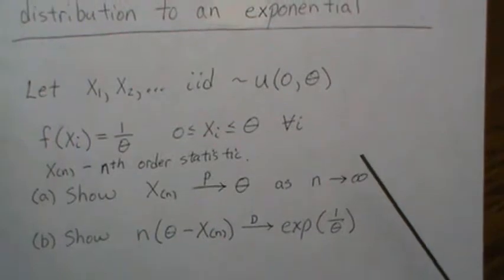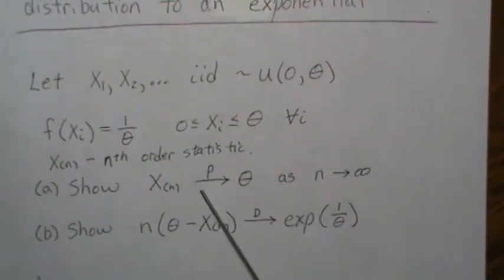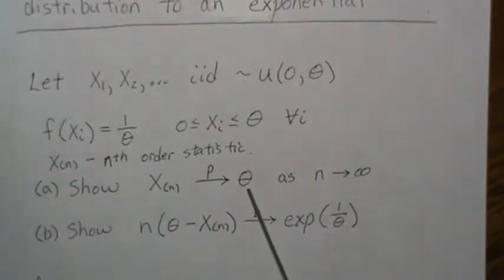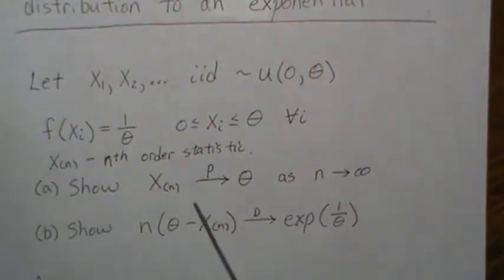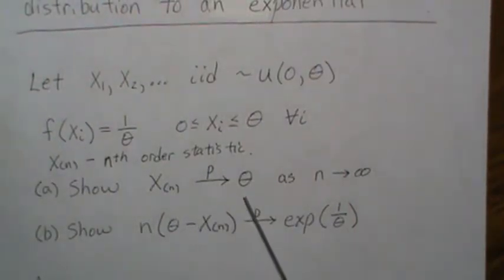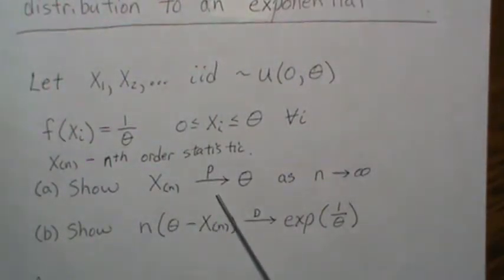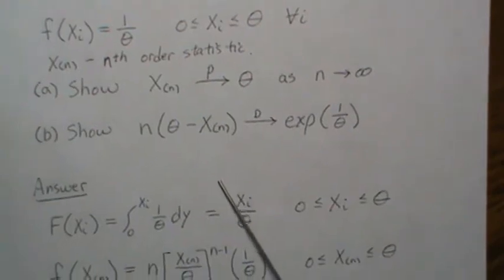So let's jump right in. And actually, the way we're going to prove this is that the distribution, the CDF of this behaves like a CDF of a constant random variable with the random variable takes on theta with probability one. And then convergence in distribution to a constant implies convergence in probability.